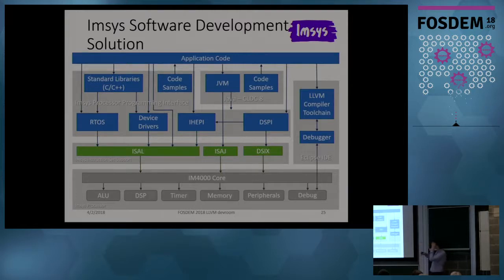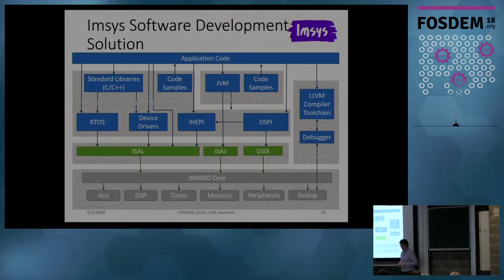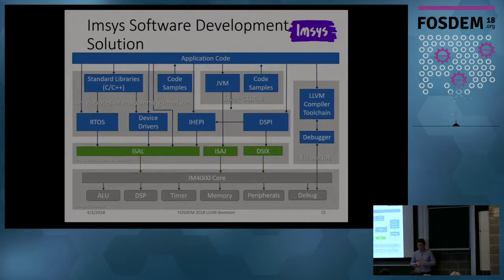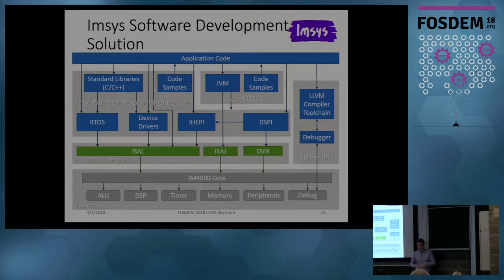Here is a more detailed overview of what we support. What's interesting is the green areas: we have Java support, we have ISA-L, and we plan to have a special part of the instruction set support called DSIX — Domain Specific Instruction Extensions. As I said, microcoding provides flexibility and reconfigurability, and we plan to generate microcode from hotspots of application code. This means not just the general purpose ISA-L, but also complex application-specific features can be implemented in microcode to improve performance.